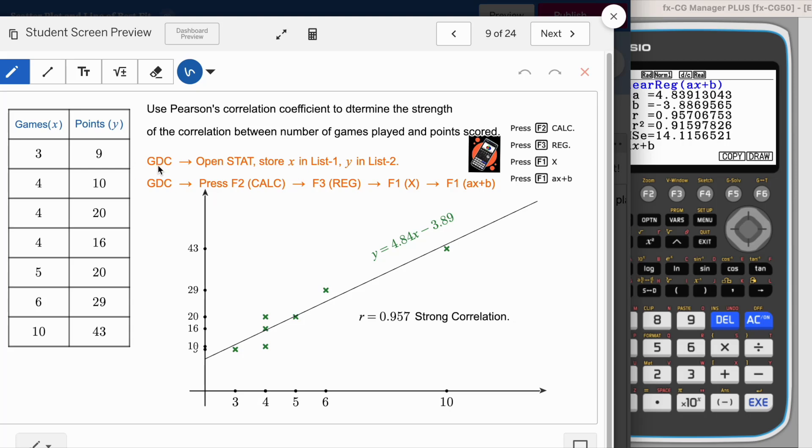Just to repeat: GDC, open it, go to statistics, store x values in list one, y in list two, and then press F2 because we want to calculate or you can go for graph. F3 for regression, F1 because it is linear. Select x and then option one, which is ax plus b. That was question number one, how you get your two answers. Number one, the Pearson's correlation coefficient and second, the regression line. Pause this video, try with one more question or just repeat this question so that you get the same answer. Then I will show you second question.